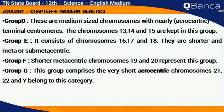Group D consists of medium-sized chromosomes with nearly terminal centromeres. Chromosomes 13, 14 and 15 are kept in this group.